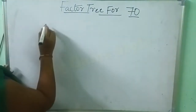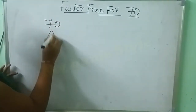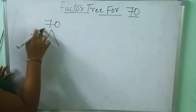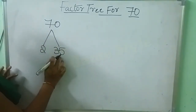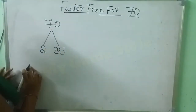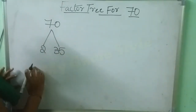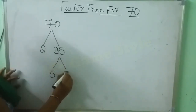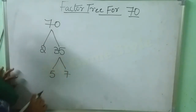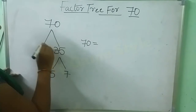Here 70 is there. So first we need to write 70 here. Then in which table will 70 come? 2 35s are 70. Here 35 is there. So in which table will 35 come? 5 7s are 35. Here 7 is equal to 70.